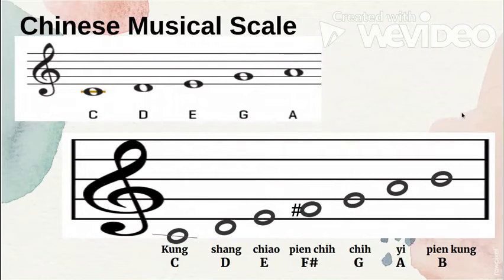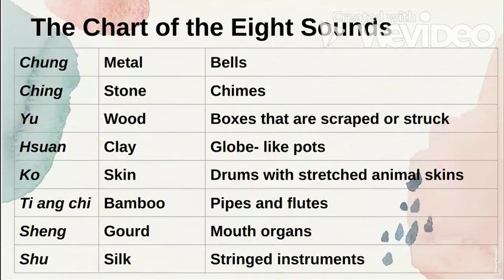So again, the two notes added were F sharp and B only. The scale goes: Kong, Shang, Chao, Pian Cha, Che, Ye, Pian Kong. They also have a chart of the eight sounds, which they use in composing their music.